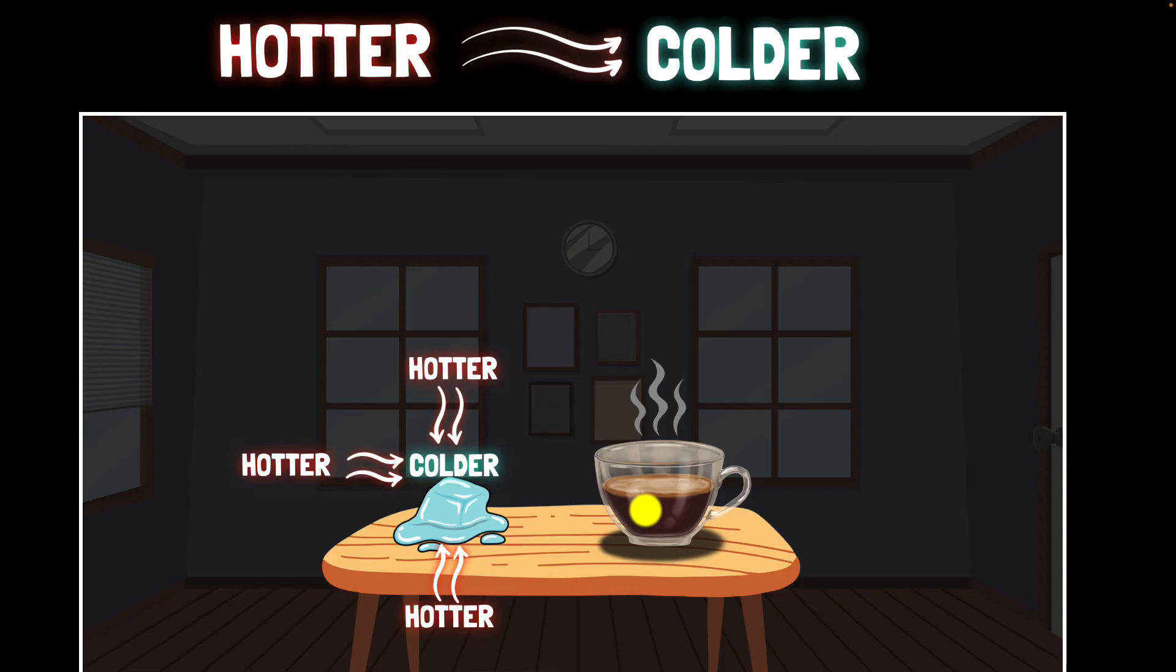On the other hand if you were to place a hot coffee on a table then now the coffee is hotter than its surrounding. So relative to the surrounding the coffee is hotter and so now energy moves again from hotter to colder region and now the coffee loses energy and that's how it starts getting colder.